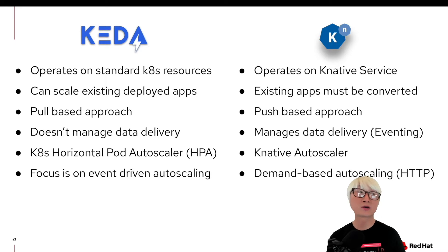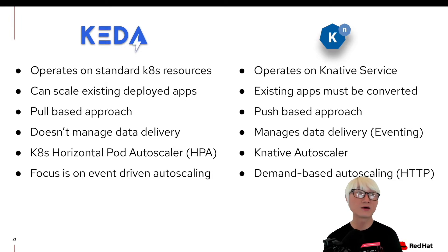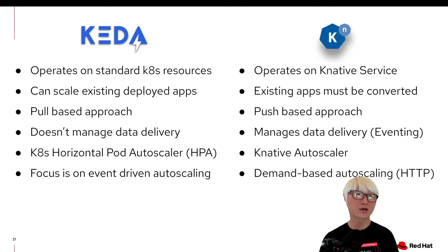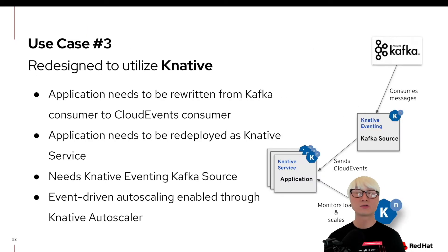KNative has its own autoscaler — the KNative Autoscaler — which pushes KNative services for autoscaling. KNative also includes KNative Eventing capability, which allows you to consume and process cloud event messaging. However, one concern for developers is that you need to rewrite the application to handle KNative eventing message processing. KNative is more focused on demand-based autoscaling triggered by HTTP requests or messaging from external services.